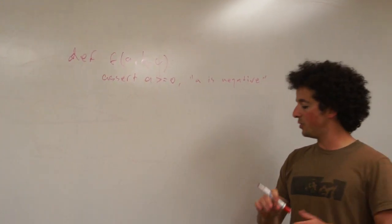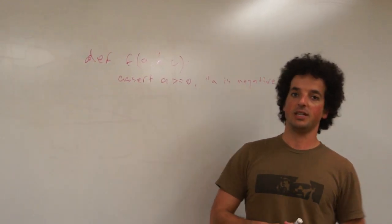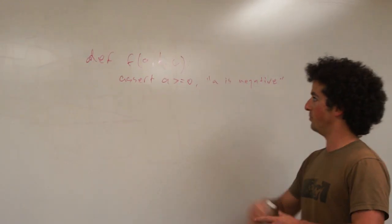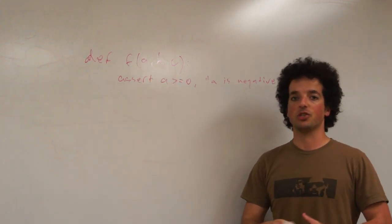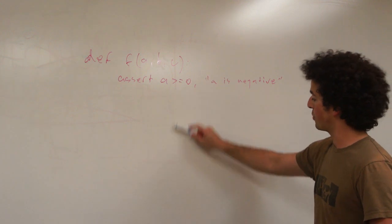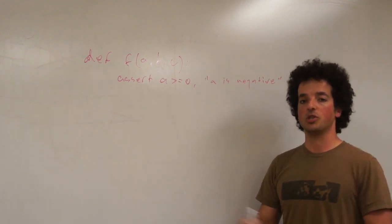Why is this useful? Because when you write programs, you want to be able to fail early. The idea is that if you use this function in a wrong way, you want to fail as early as possible instead of going through a whole bunch of calculations and getting some nonsensical result at the end.